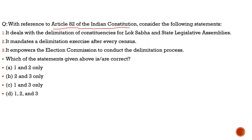Now, solving the question on Article 82: Statement one — it deals with delimitation of constituencies for Lok Sabha and state legislative assemblies — correct. Statement two — it mandates a delimitation exercise after every census — 100% correct, though under the 42nd Constitutional Amendment it was paused and further paused till after the 2026 census. Statement three — it empowers the Election Commission to conduct delimitation — incorrect. It is the Delimitation Commission, not the Election Commission. Correct statements are one and two only.